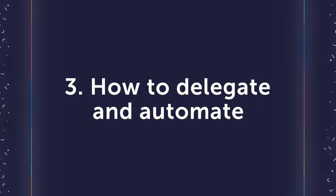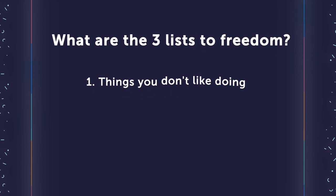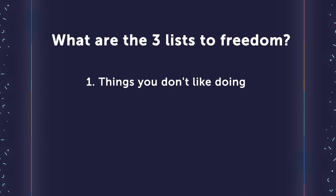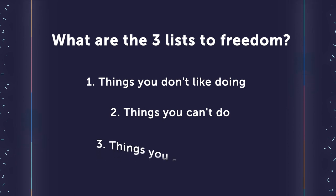Now I want to tell you how to delegate and automate so you can make more time for yourself and for projects you love. The first thing you should do is write down the things you do so you can figure out what to delegate or automate. I learned this tip from entrepreneur Chris Ducker, who has these lists called the 'three lists to freedom.' List one is writing down things you don't like doing. List two is writing down things you can't do. List three is writing down things you shouldn't do.